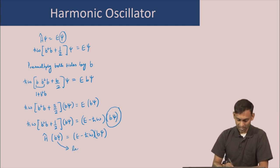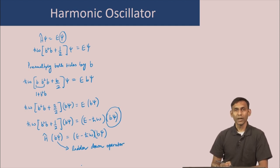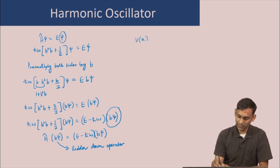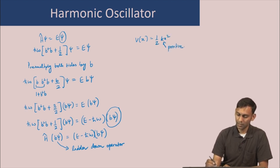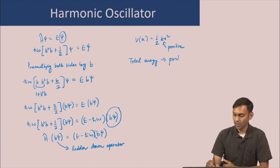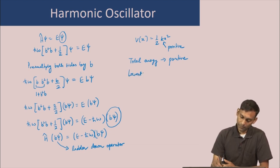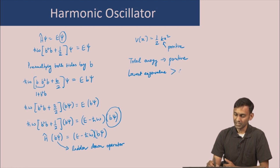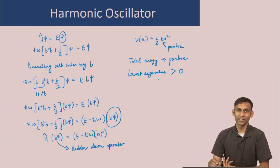And since this lowers the energy, it is called the ladder-down operator. We now make an argument that for a harmonic oscillator with potential energy V(x) = (1/2)kx², where k is positive, the total energy is thus positive. This implies that the lowest eigenvalue of the Hamiltonian must be greater than 0. So the eigenvalues have a lower bound, and all values are greater than that lower bound.